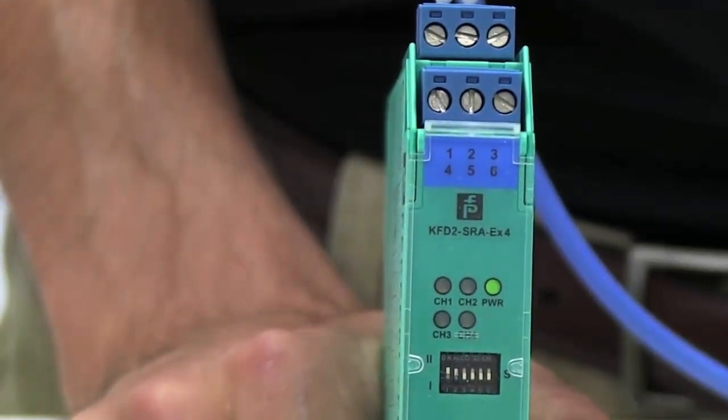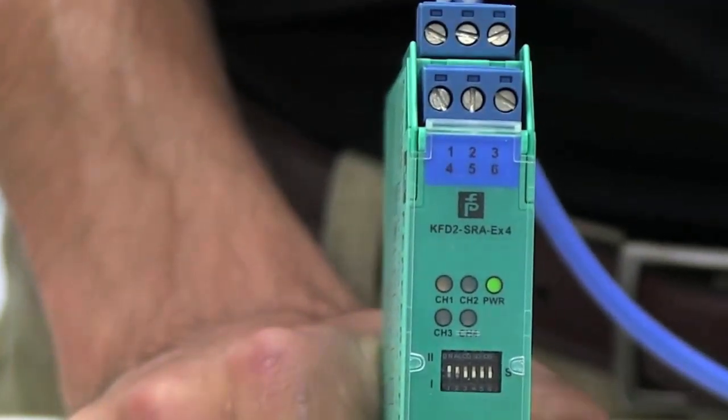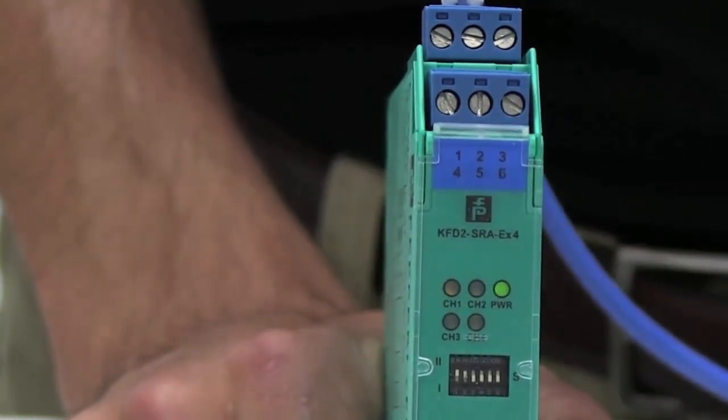If normally open logic is desired, DIP switches on the front of the barrier can be inverted to send a normally open signal to a control device, have it be a PLC, located back in the safe area.